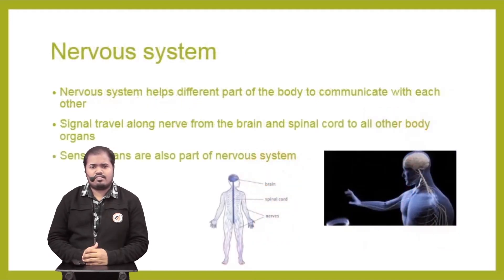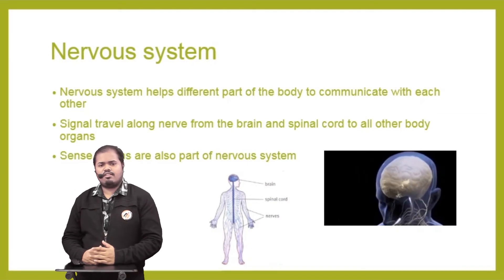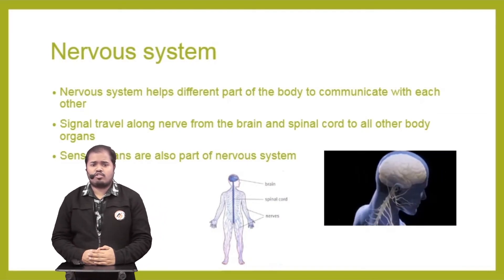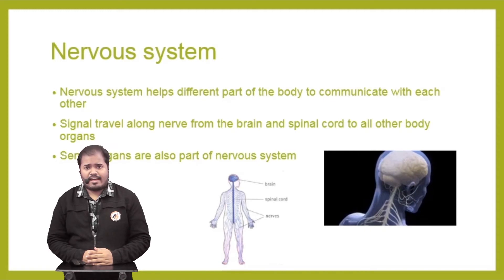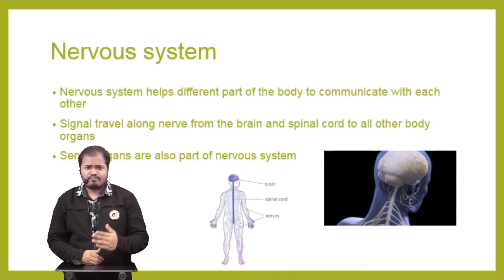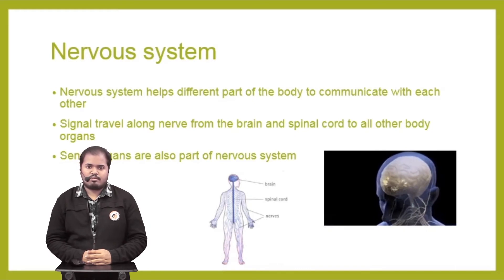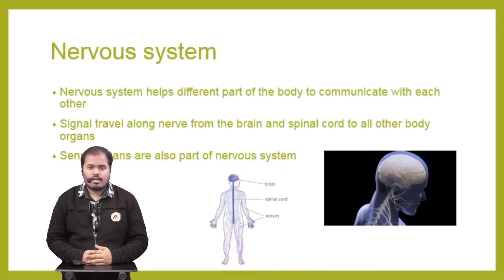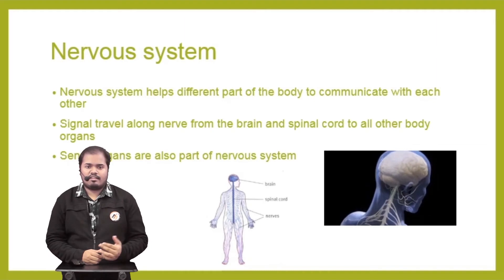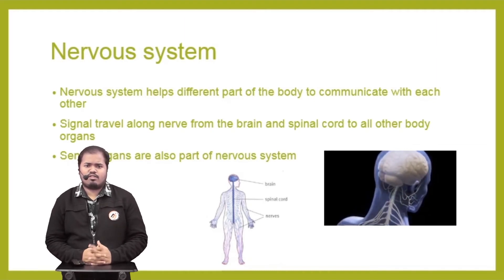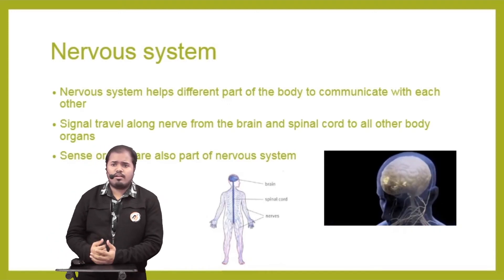Next is the nervous system, also called the central nervous system. The nervous system plays a vital role in controlling the movement of your body and all other activities. For example, right now as I'm talking to you, that is controlled by the nervous system — actions like moving my mouth, the movement of my eyes, and my hearing.